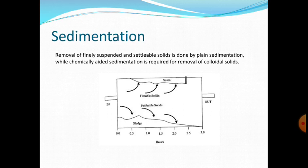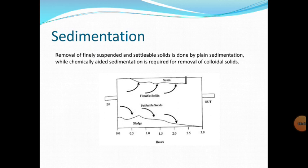The second unit operation is sedimentation. In sedimentation, removal of finely suspended and settleable solids is done by plain sedimentation, while chemically aided sedimentation is required for removal of colloidal solids. Colloidal solids are particles which are very small — soluble or insoluble in liquid — ranging from 1 to 1000 nanometers in diameter. As time passes, the amount of sludge that settles becomes progressively less.